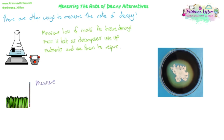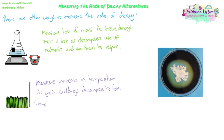We could also measure increases in temperature. As grass cuttings or plant materials decompose to form compost — in a compost heap or sealed in a bag — they release heat because of the respiration of the decomposer microorganisms. The more energy they have, the more they grow and divide, the more heat gets released. You can see an increase in temperature as decomposition happens, and measure that increase over time to show rate of decay.